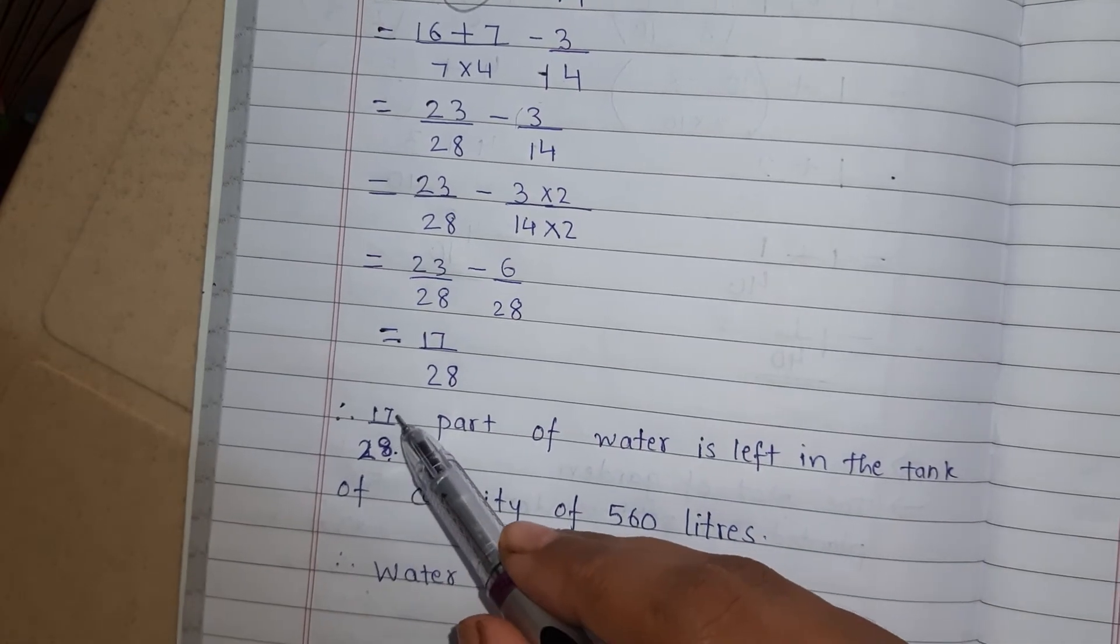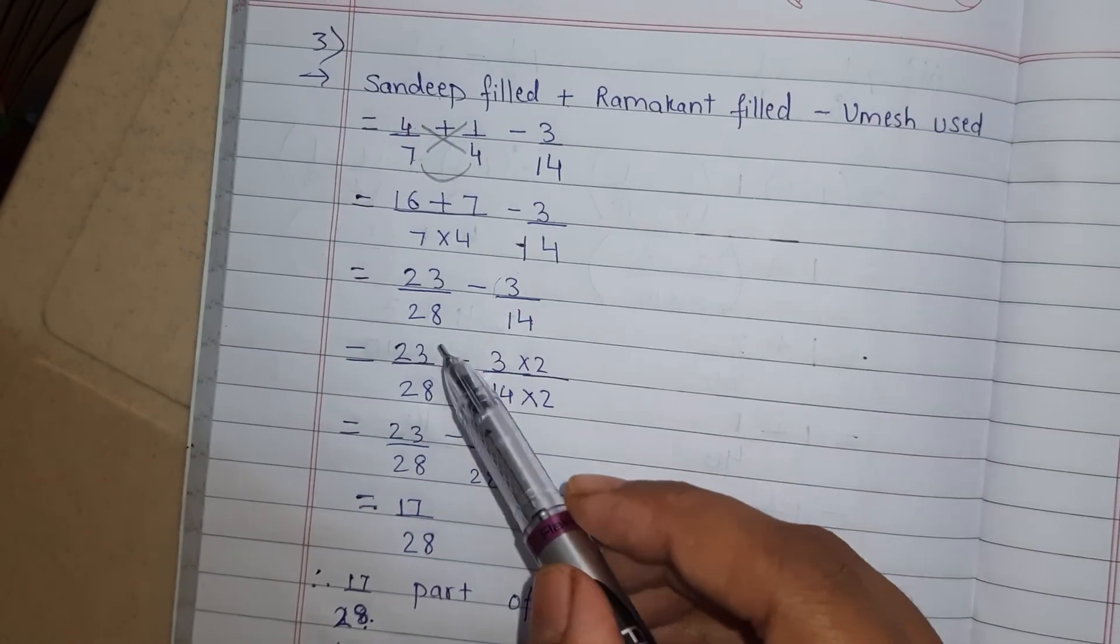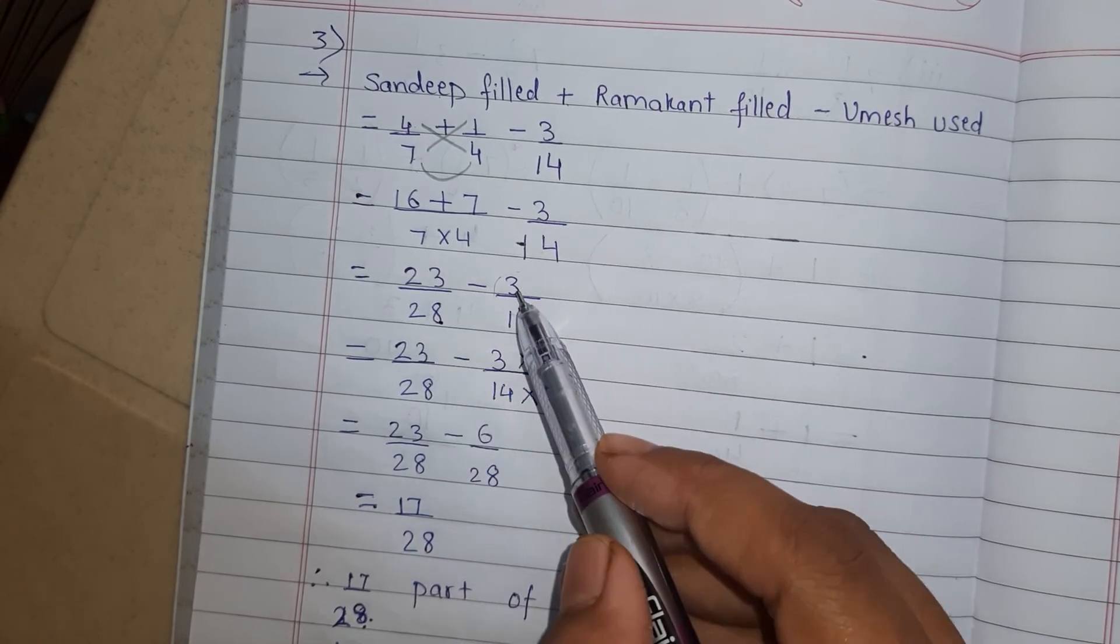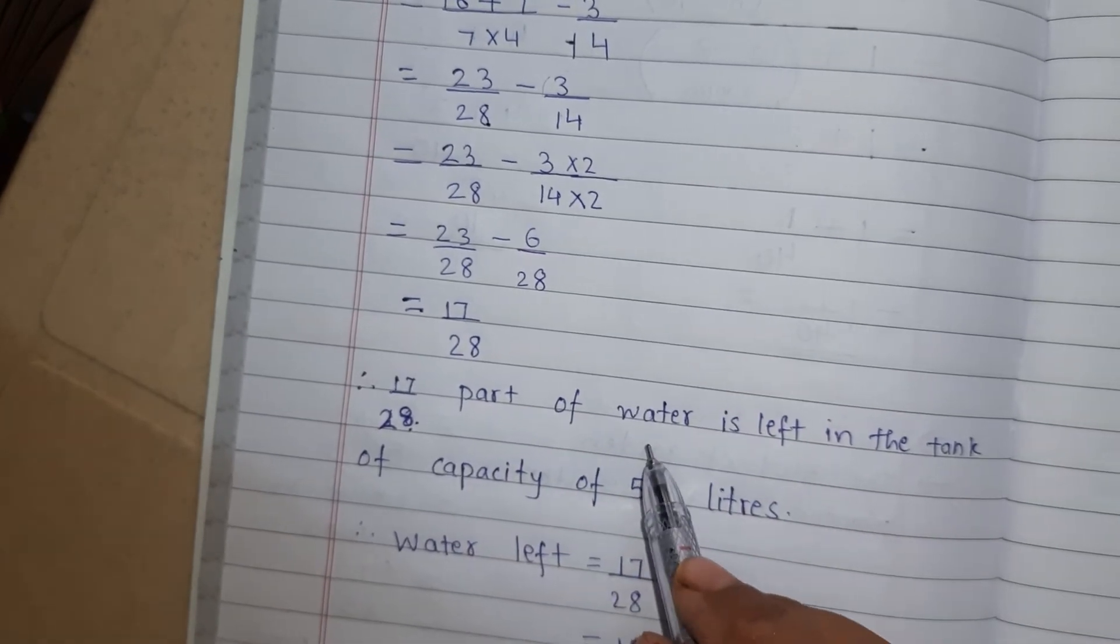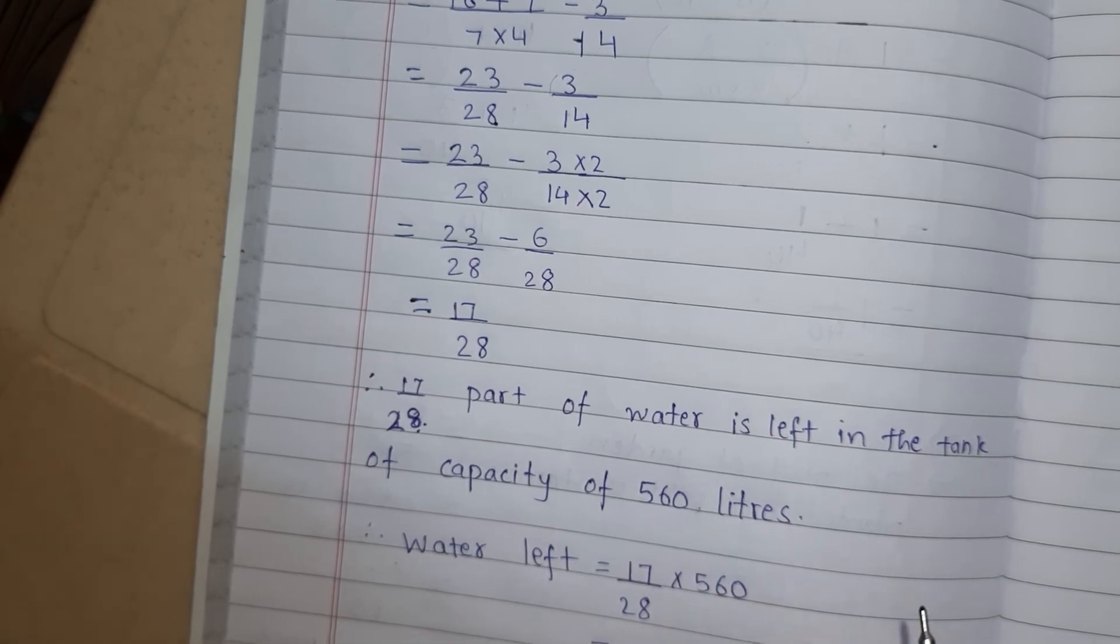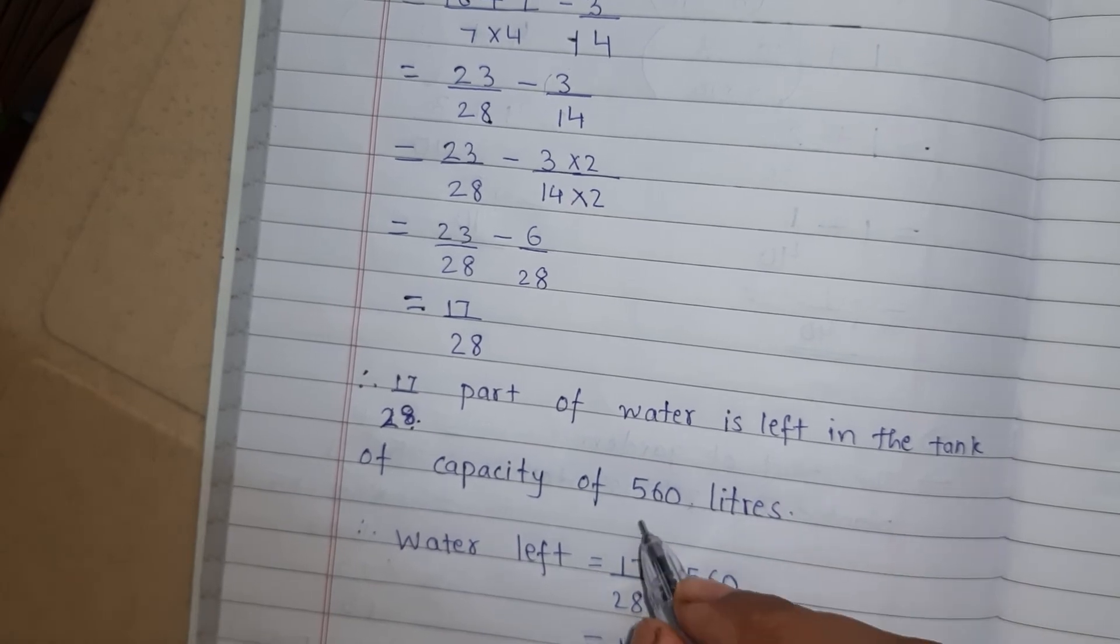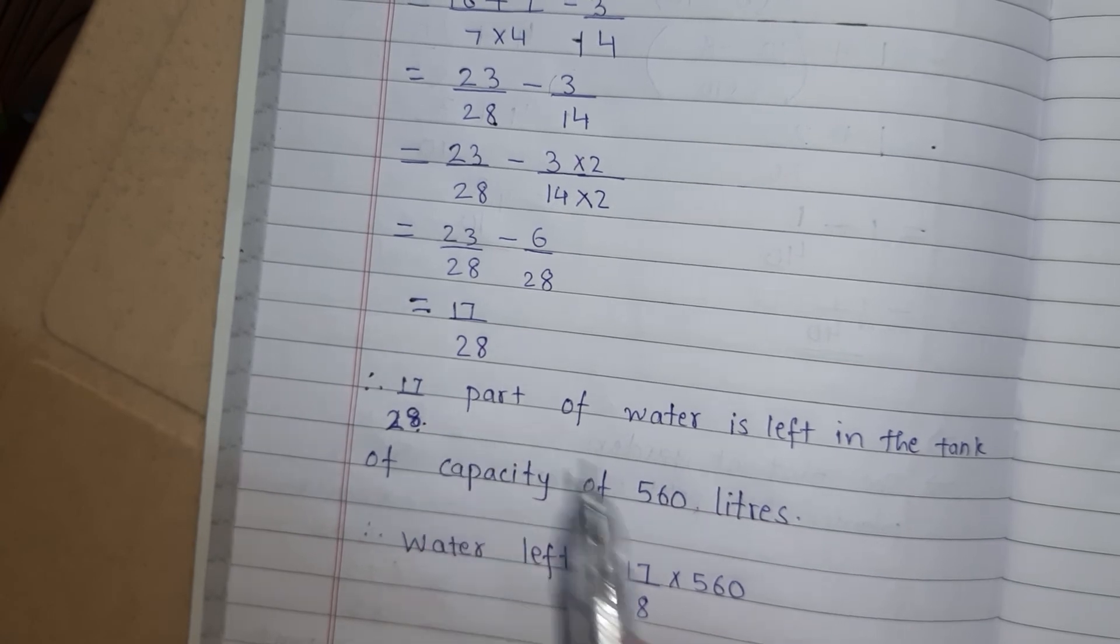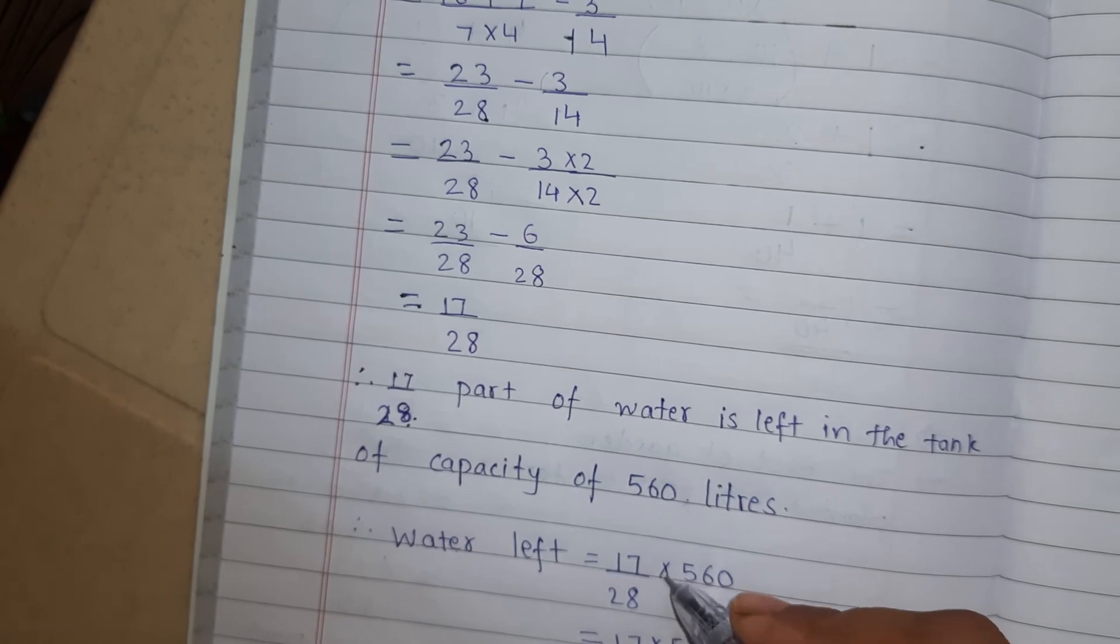So answer is 17/28. So 17/28 part of water is left in the tank. Ab kitna pani bacha hai tank mein? Pehle dono ne milke pani fill kiya. To kitna fill kiya? 23/28 part unhone fill kiya. Us mein se itna pani use ho gaya. To ab kitna bacha hai? 17/28 part. But we know the capacity of the tank. What is the capacity of the tank? 560 liters. So 560 liters ki tank mein itna pani bacha hai. So how we find the water that is left in the tank? By doing multiplication.